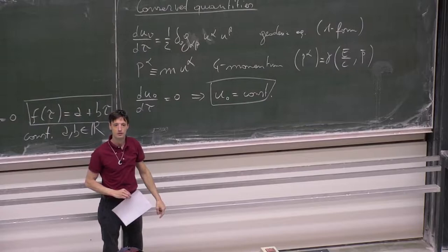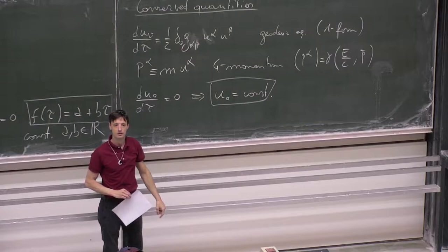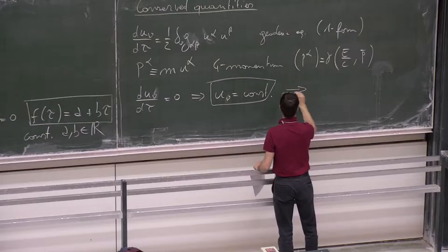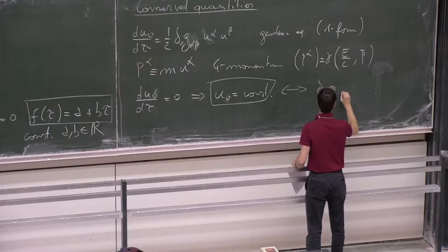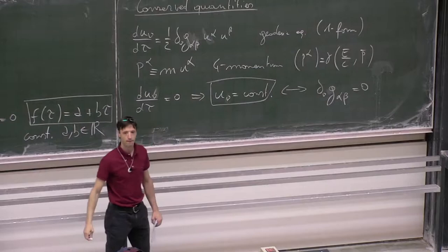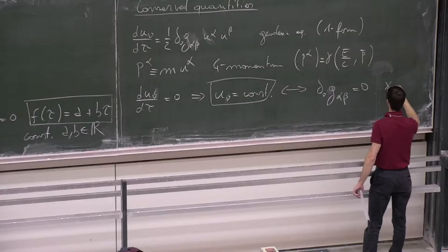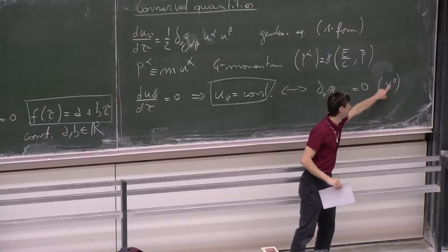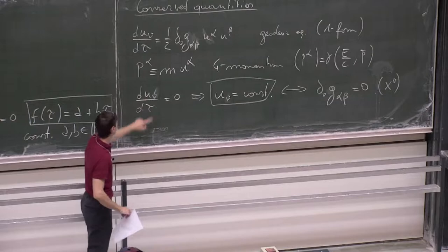Going generic: whenever partial_nu of g_{alpha beta} equals zero — meaning the metric g is constant along the x^nu direction — then the momentum p_nu is conserved.